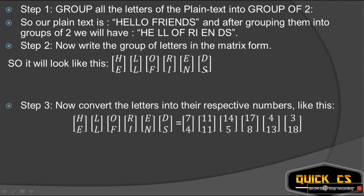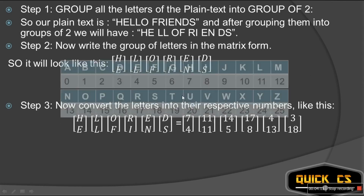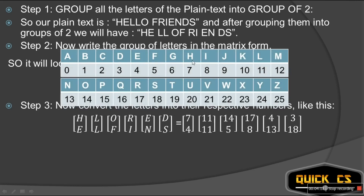Step three: convert the letters into their respective numbers using the table. HE is represented by 7 and 4. LL is represented by 11 and 11. OF: O is 14, F is 5, so we write 14 and 5. RI: R is 17, I is 8, so we write 17 and 8. EN: E is 4, N is 13, so we write 4 and 13. DS: D is 3, S is 18, so we write 3 and 18.